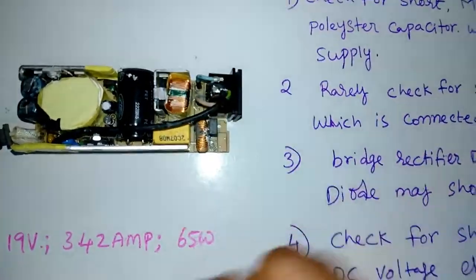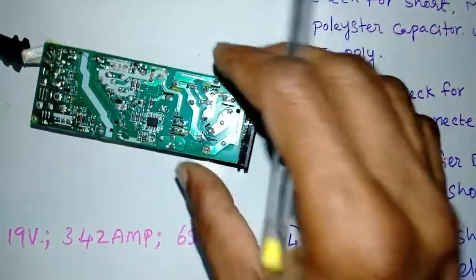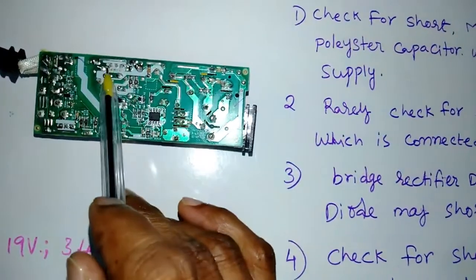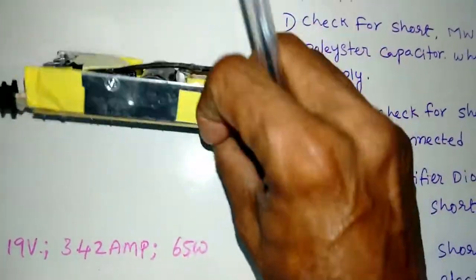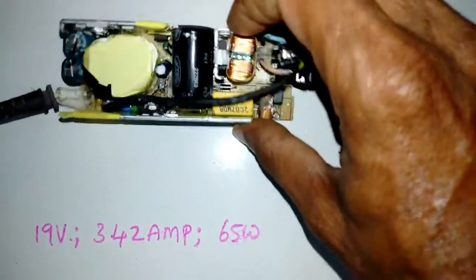One more thing, this main output transistor, this one MOSFET, main output MOSFET. I will show you this one.